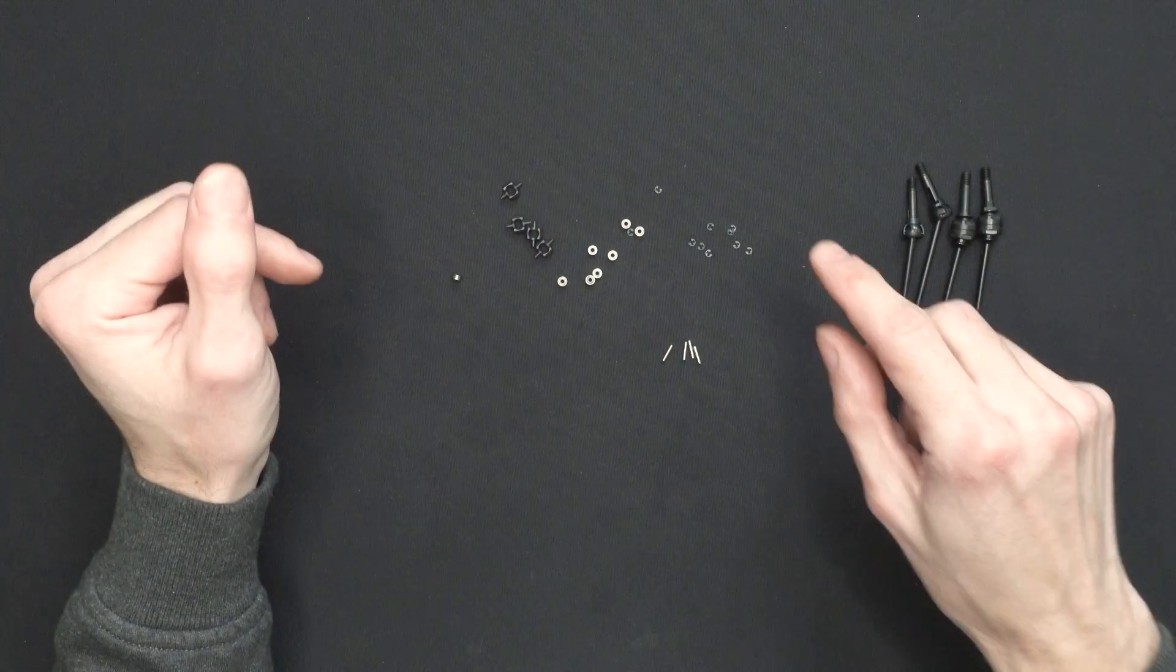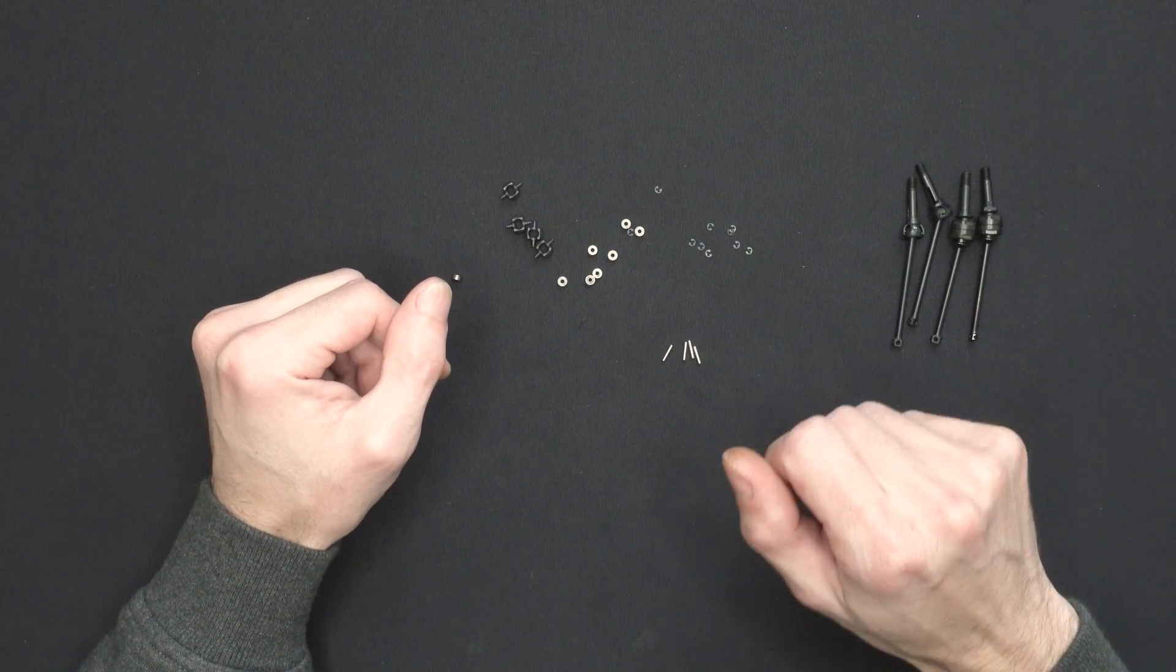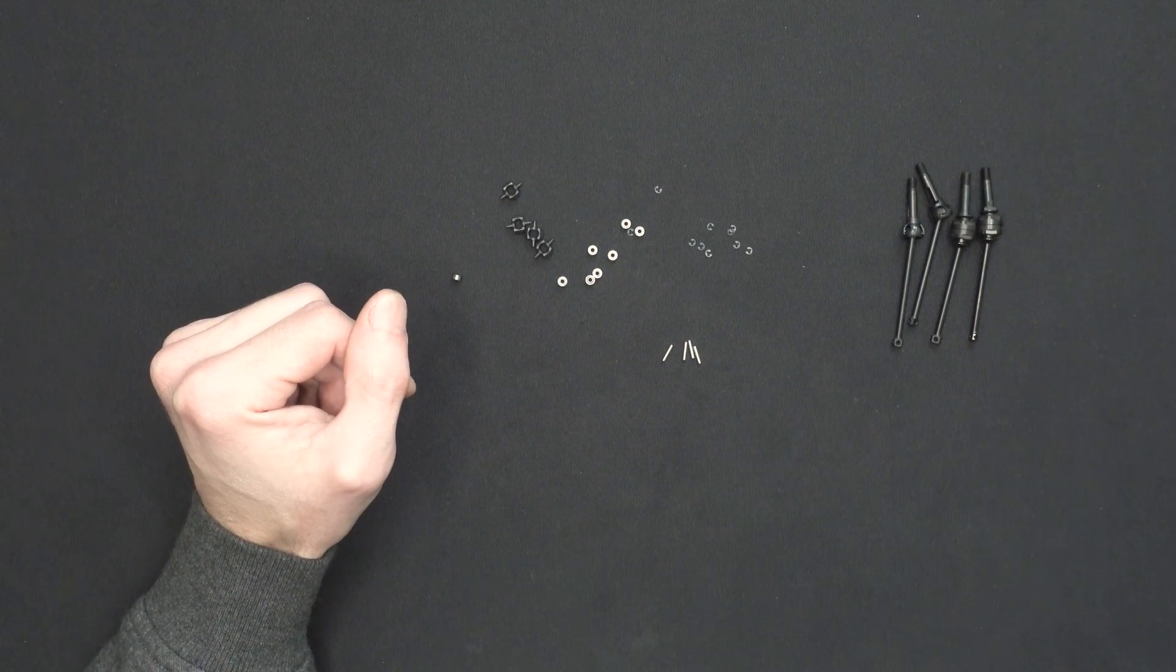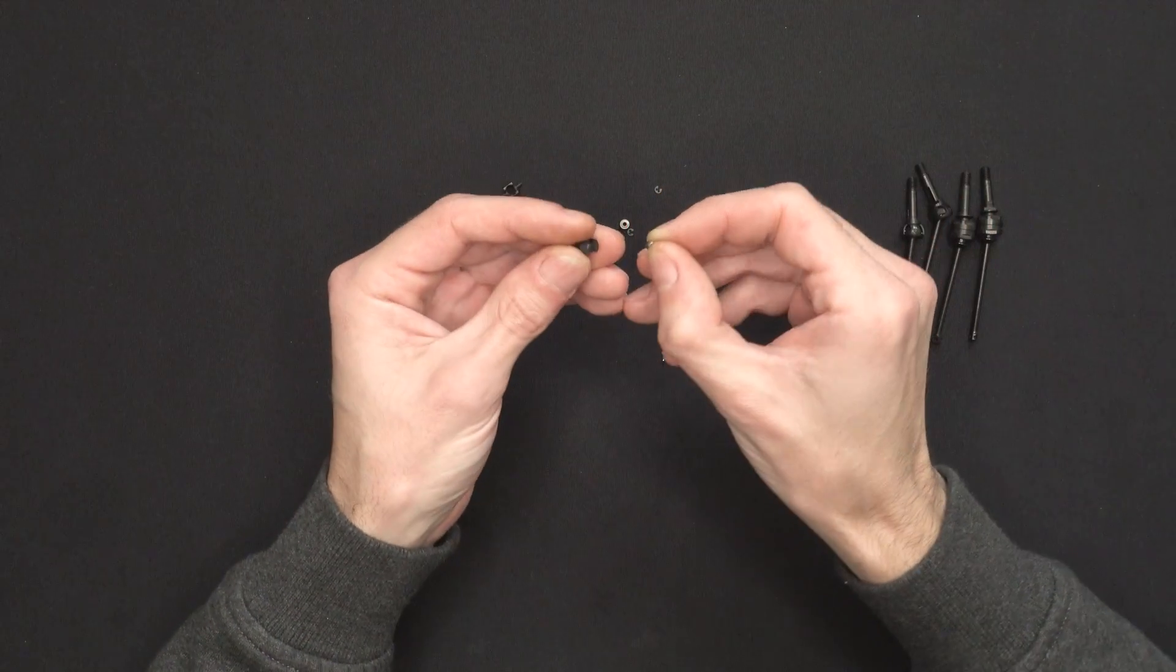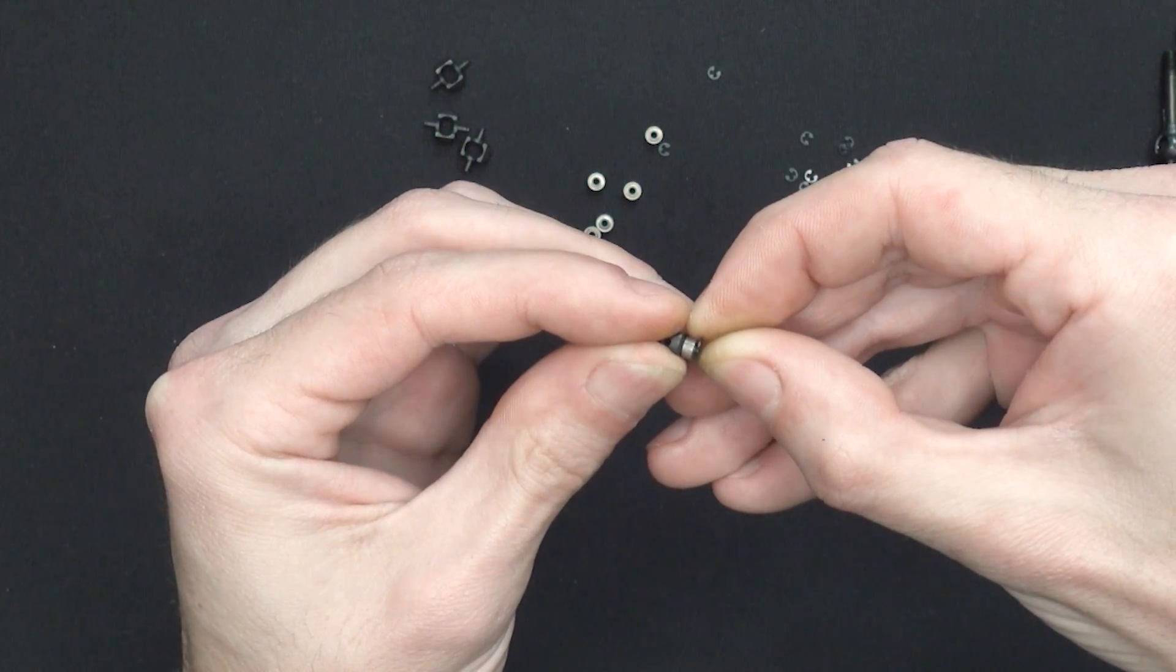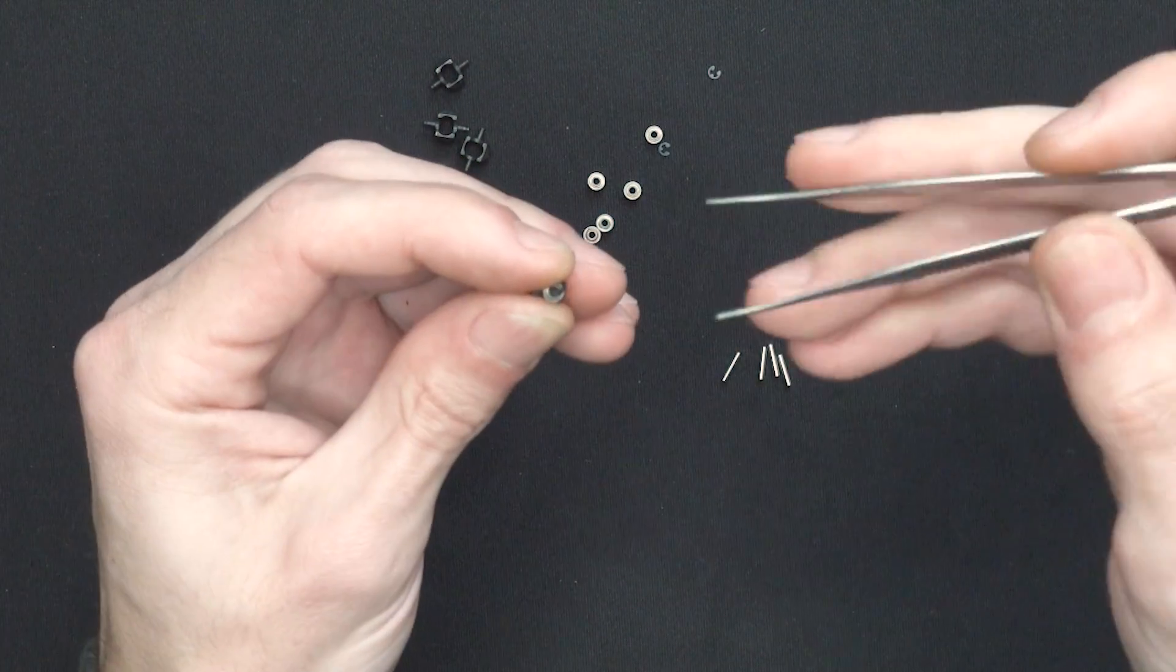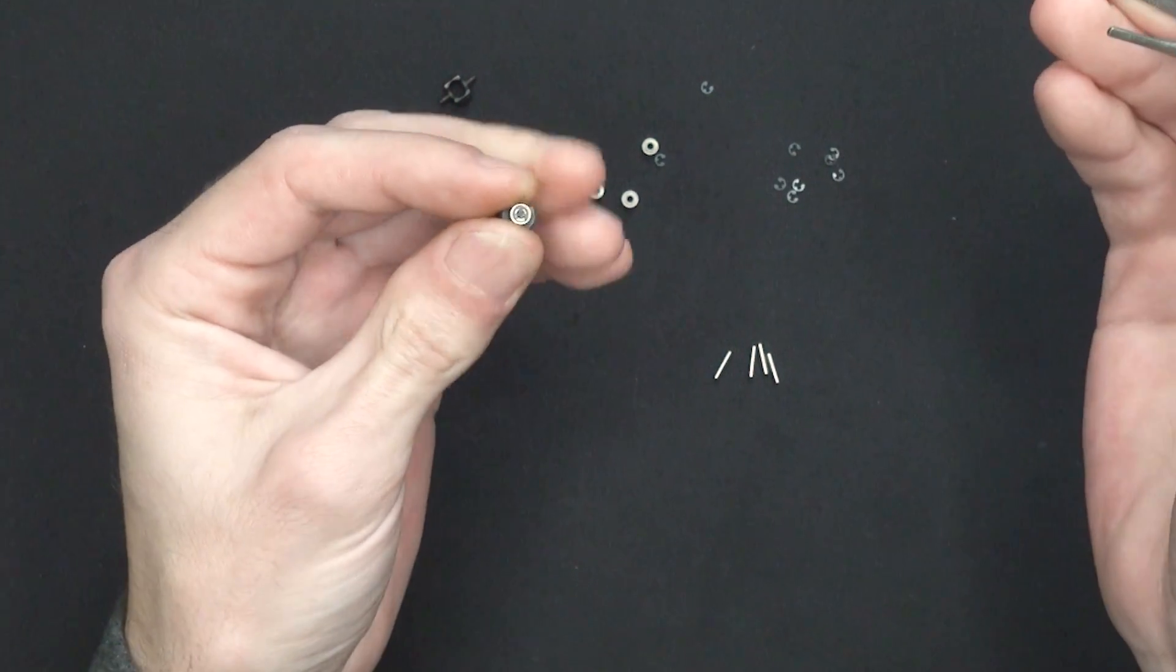And on top of it, the E-clips, they look very small, but you've been given a few extra in your kit, so you can fail a few times at this point. It's not a big deal. So first, we're going to install the bearings and secure them with E-clips. I like to start the E-clips with my fingers and with a slim pair of tweezers, do the rest of the job. And that's it.